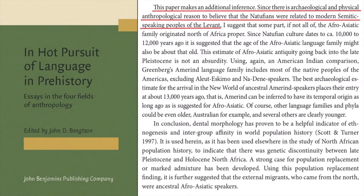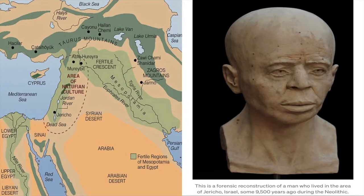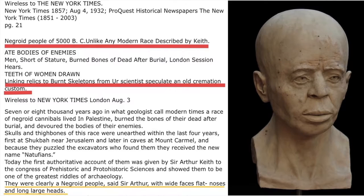From In Hot Pursuit of Language and Prehistory, the paper makes an additional inference: since there is archaeological and physical anthropological reason to believe that the Natufians were related to modern Semitic-speaking peoples of the Levant. The area of Natufian culture stretched basically from the Negev near Sinai all the way up to Syria and northern Mesopotamia. On screen is a forensic reconstruction of a Natufian. According to a New York Times paper from 1857 dealing with the Natufians: 'They were clearly a Negroid people,' said Sir Arthur, 'with wide faces, flat noses, and long, large heads.'